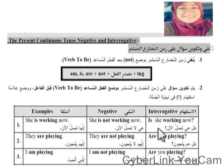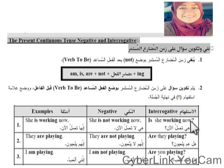How to make a question? سهلة جدا برضو. بعمل حركة the scissors — بنزل ال is اول واحدة، بعدين بجيب subject، بعدين ال verb في الـ ing، وبكمل بقية الجملة. ما ننساش نحط question mark في الاخر. It's very simple. في ال question بسألي اما بـ is or are. It's very simple, it's very easy.